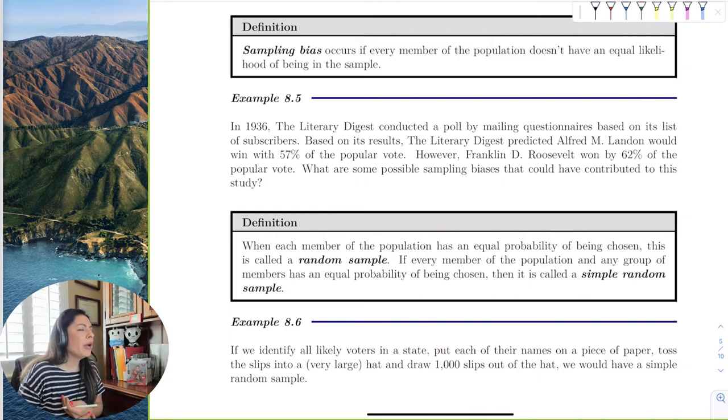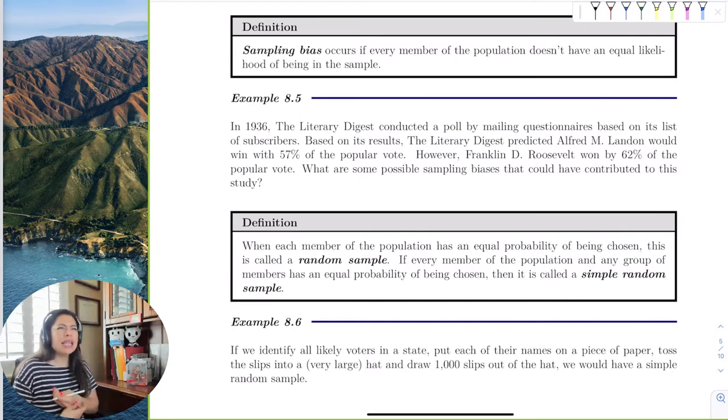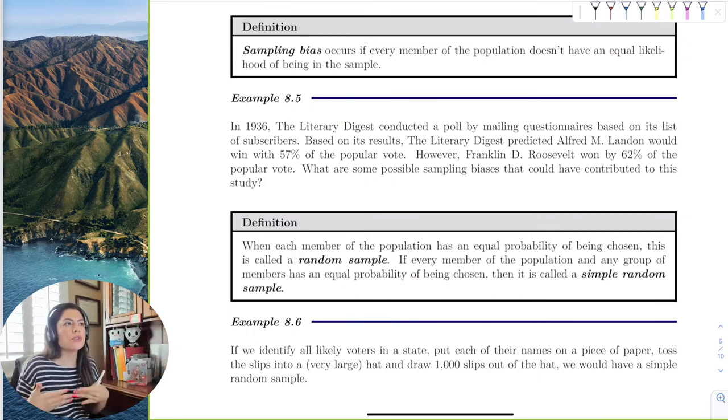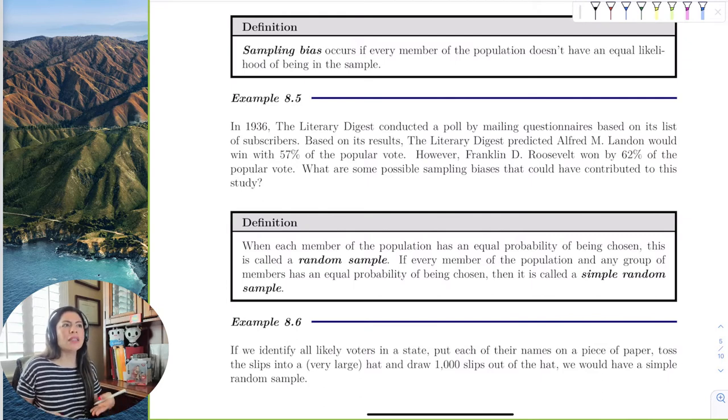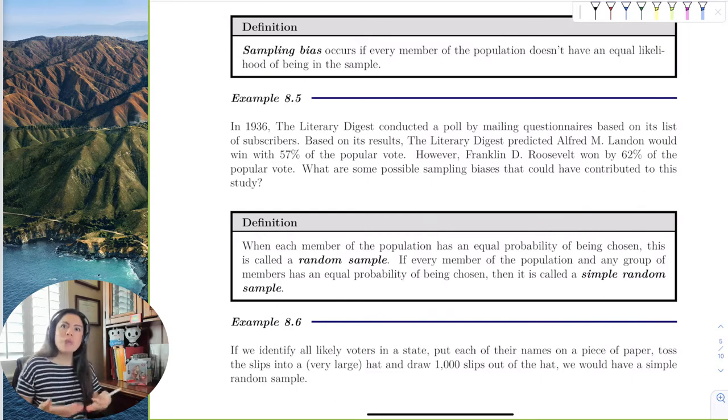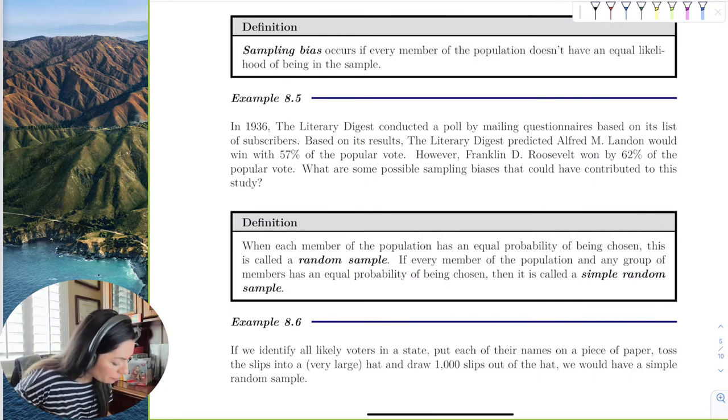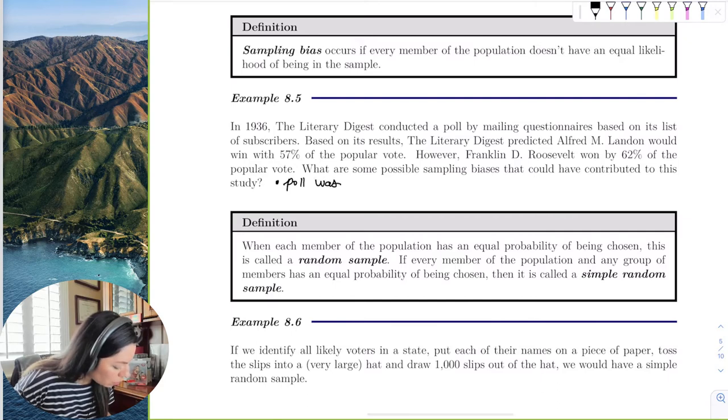So this poll that the Literary Digest took actually said that Landon would win by more than half. But in real life, actually, Roosevelt won by 62%. So what are some possible sample biases that could have contributed to the inaccuracies of their study? So when we think about Literary Digest, did everyone that was voting for the next president during 1936 election time, did they have an equal chance of being selected for this sample? No, right? Only the Literary Digest subscribers.